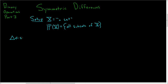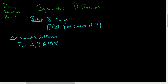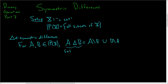The notation we'll use is a triangle, and the triangle will denote the symmetric difference operation. For two sets, say capital A and capital B in the power set of capital X — in other words they are subsets of capital X — we'll take the symmetric difference of A with B. We'll define this to be all of the elements in A but not in B, or union, all of the elements in B but not in A. This is the set of all elements that are in either A or B but not in both.